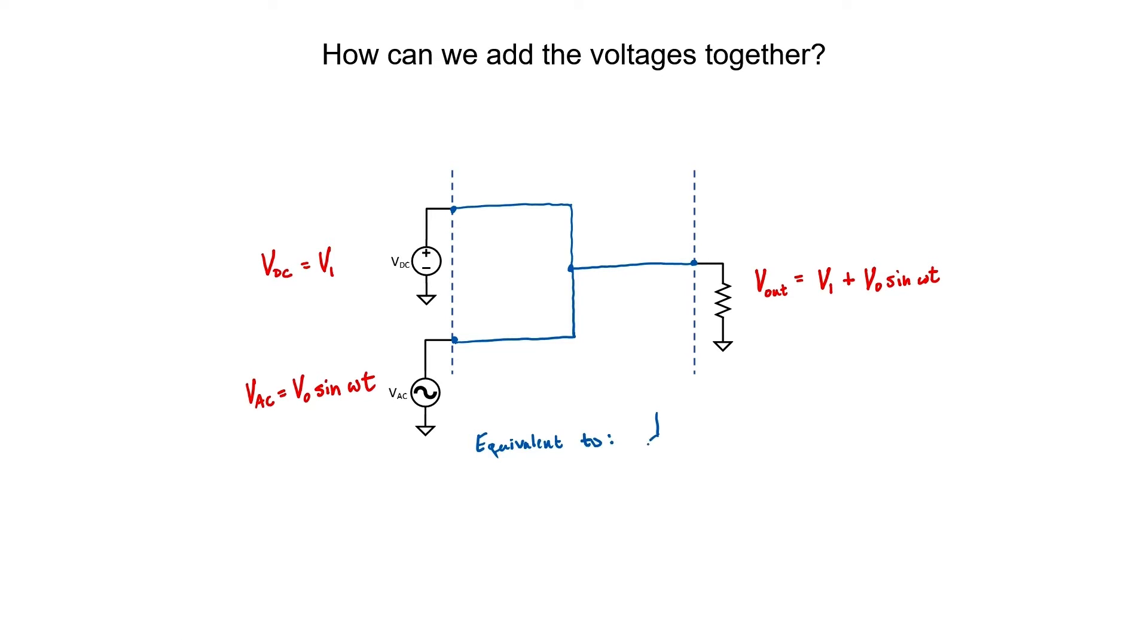Imagine another scenario where I just had two DC sources, a 1 volt source and a 2 volt source. What if I just tied those together? Is the result 3 volts? No. The result is neither 3 volts, nor is it 1 volt, 2 volts, or anywhere in between them.